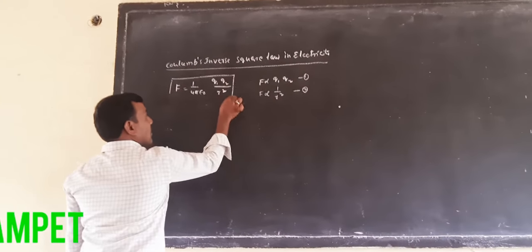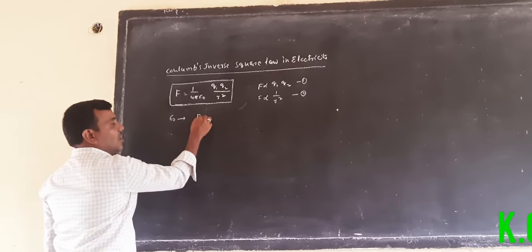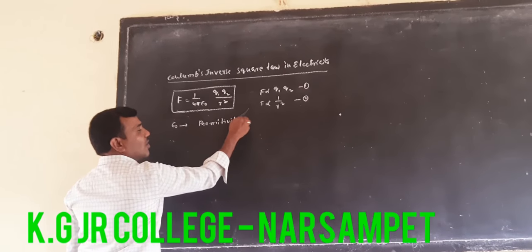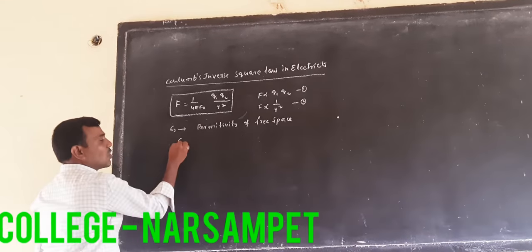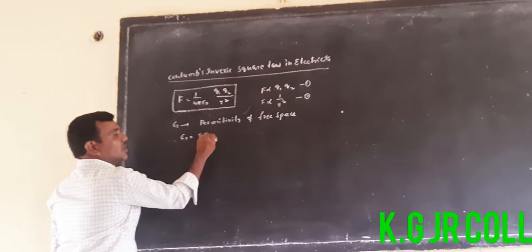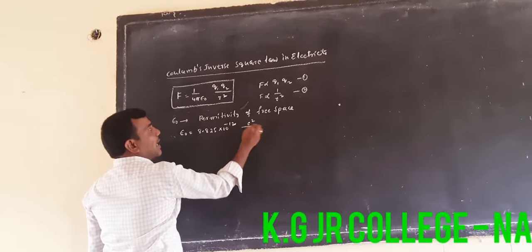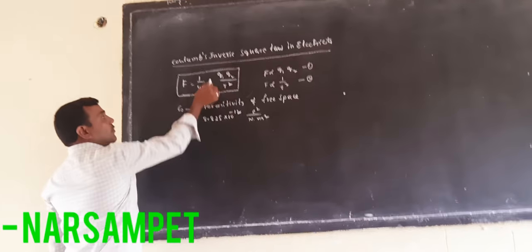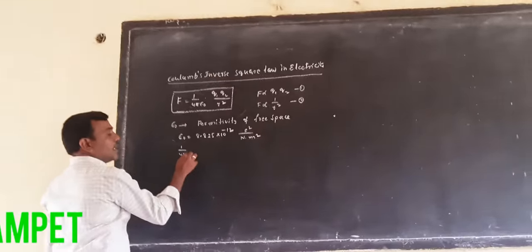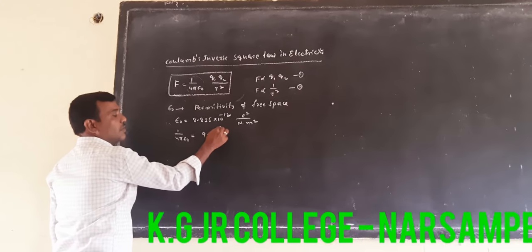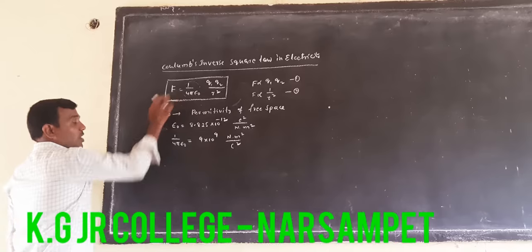From this equation, epsilon naught is the permittivity of free space. The value of epsilon naught is 8.85 into 10 to the power of minus 12. And the value of 1 by 4π epsilon naught is 9 into 10 to the power of 9.